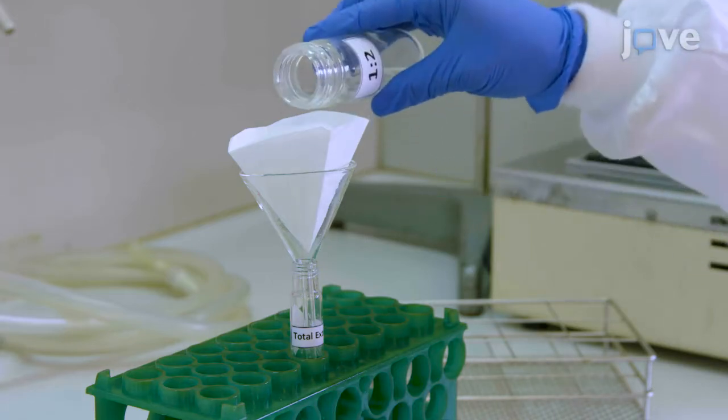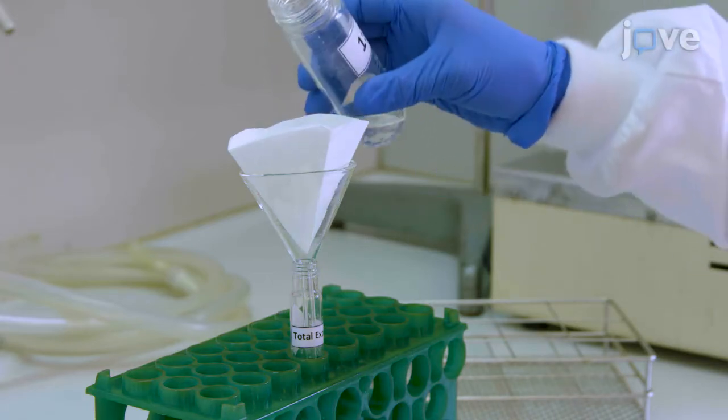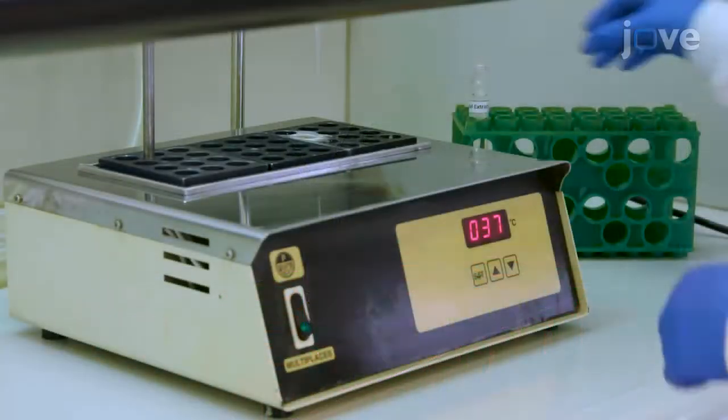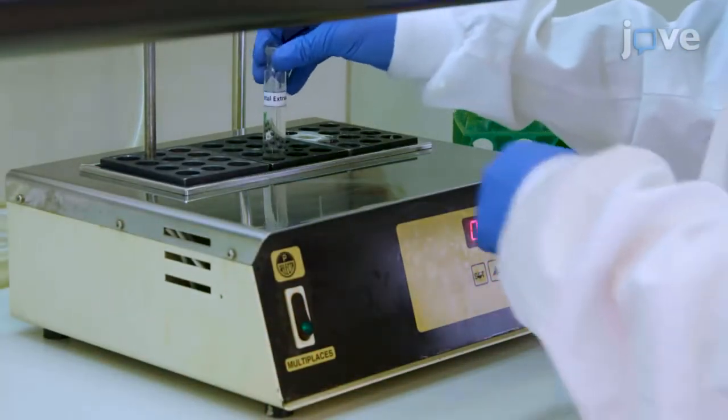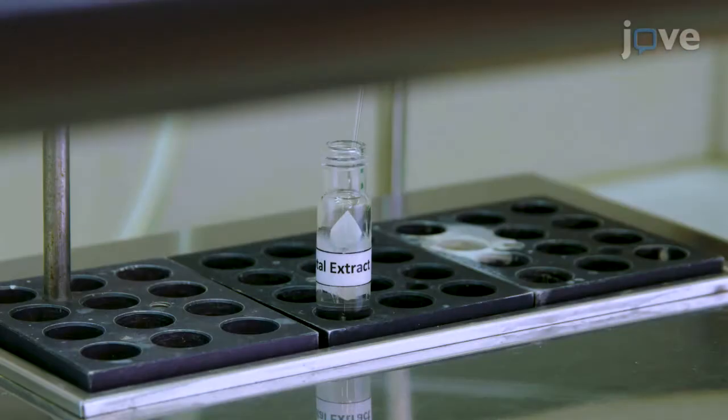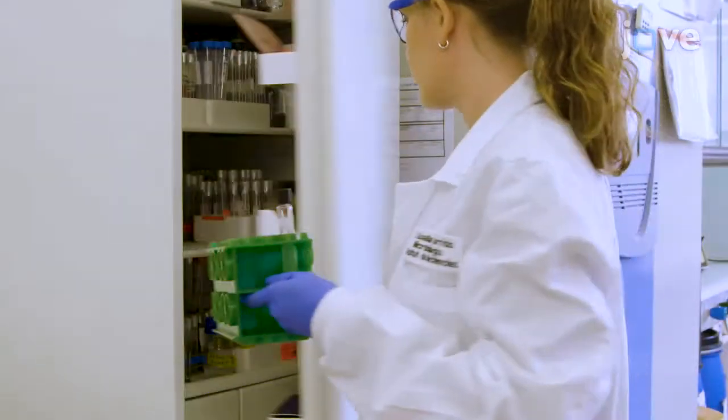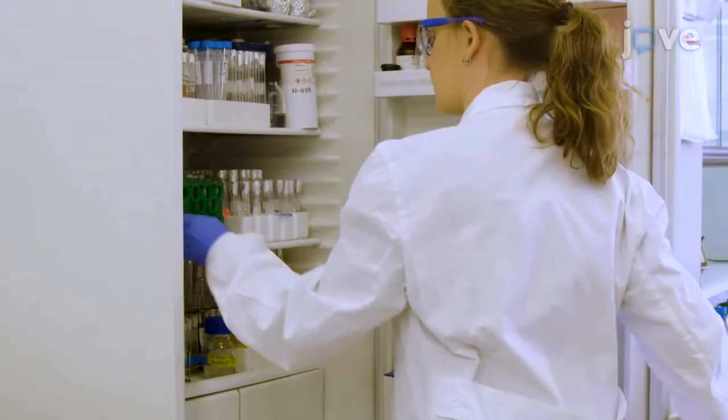On the next day, filter the organic solvents through a glass funnel lined with filter paper into a glass tube. After using nitrogen gas flux to evaporate the liquid phase in the tube, fill the tube with nitrogen gas and store at 4 degrees Celsius.